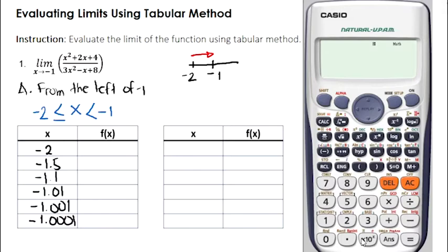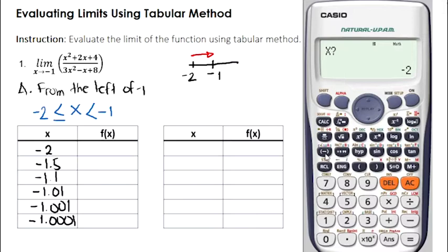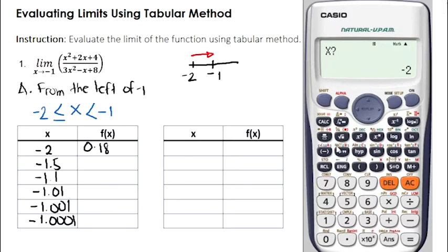Next, we're going to use our calculator to solve for the values of f(x). We can write the function in our calculator: x squared plus 2x plus 4 over 3x squared minus x plus 8. Then we click the Calc button, enter negative 2, and click the equal sign. The answer is 0.18. Next, we assign negative 1.5 as the value of x, and the answer is 0.2.